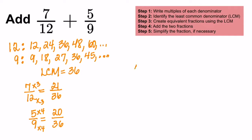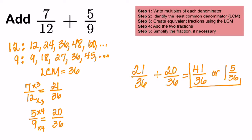Now that we have created our equivalent fractions using the LCM, we need to add the two fractions together. So 21 plus 20 is going to get us 41 over 36, or 1 and 5 over 36. If you need help changing the improper fraction to a mixed number, refer to my video on simplifying improper fractions.